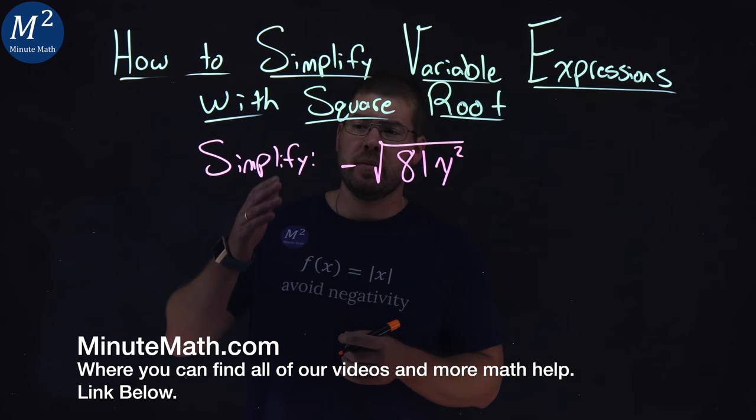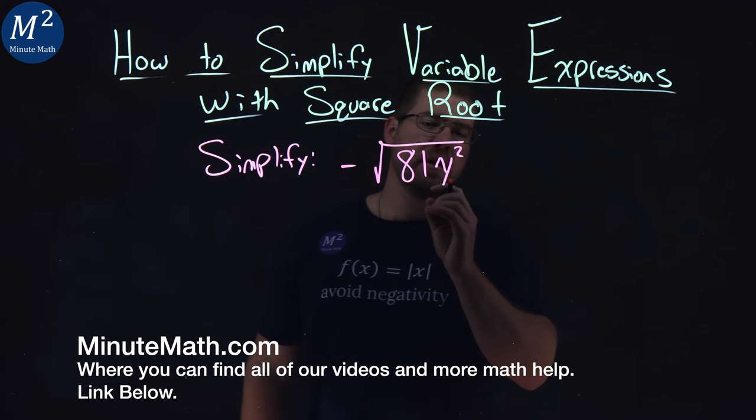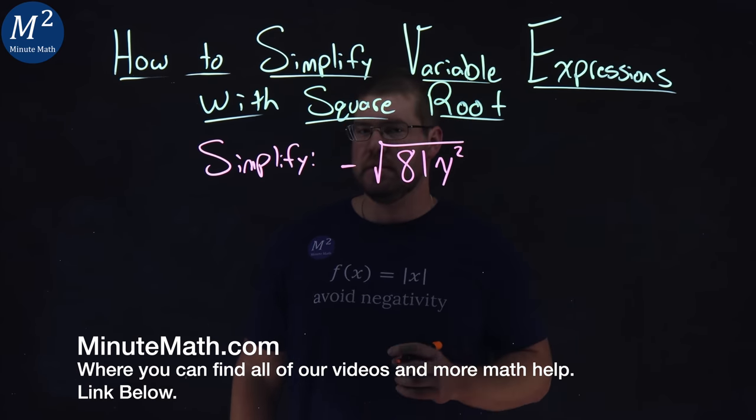We're given this problem here. Simplify the negative square root of 81 times y squared.